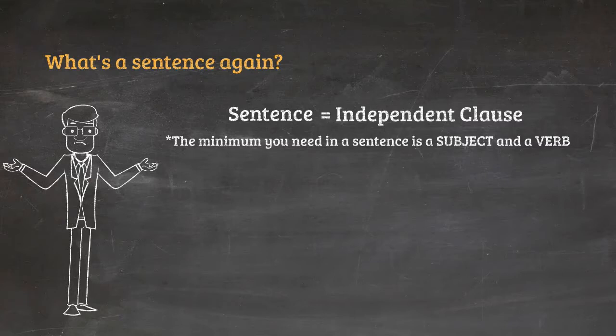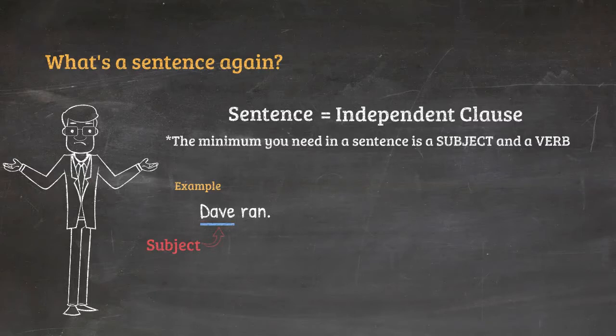So a sentence can be even something as simple as 'Dave ran.' Dave is the subject, ran is the verb. Granted, most sentences are longer and more descriptive, but 'Dave ran' is still a perfectly normal sentence.